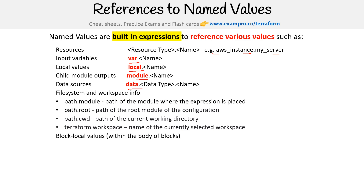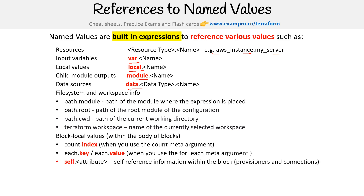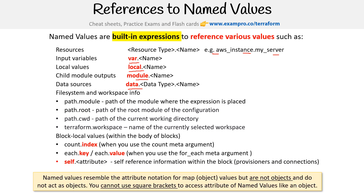Then we have block local values. These are things that appear within the body of blocks — this could be within a resource's provisioners, things like that. If we're using the 'count' meta-argument, we get 'count.index', so we can say this is the fourth iteration of this count loop. Then we have 'for_each', which allows us to have the key and the value, so we can access that during our iterations. We have 'self', which references information within provisioners or connections — it's just a self-referencing thing. Named values resemble the attribute notation of map or object values, but are not objects and do not act as objects. You cannot use square brackets to access attributes of named values like an object.